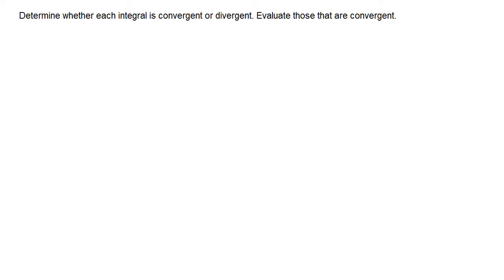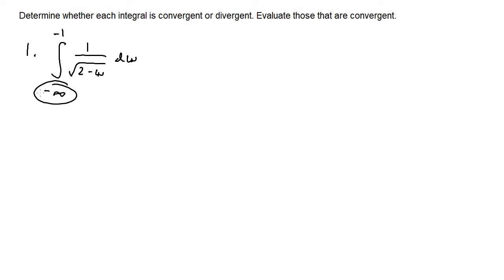For these problems, we'll determine whether each integral is convergent or divergent, then evaluate those that are convergent. For number one, we have the integral from negative infinity to negative one of one over the square root of two minus w, dw. Because negative infinity is one of our bounds, we know this integral is improper.